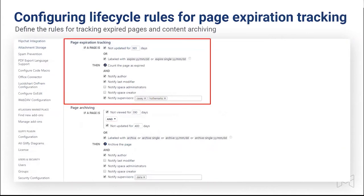The second setting is expiration tracking — again a number of days after which a page should be considered not updated. But here you can also use labels. There is a collection of preset labels you can find in the app documentation. If you use those labels, you can manually control page expiration. For example, if you use a label with an exact date, regardless of whether there's a number of days set up, the page will be considered outdated on the date you specified in the label — giving you a more manual way to control this setting.